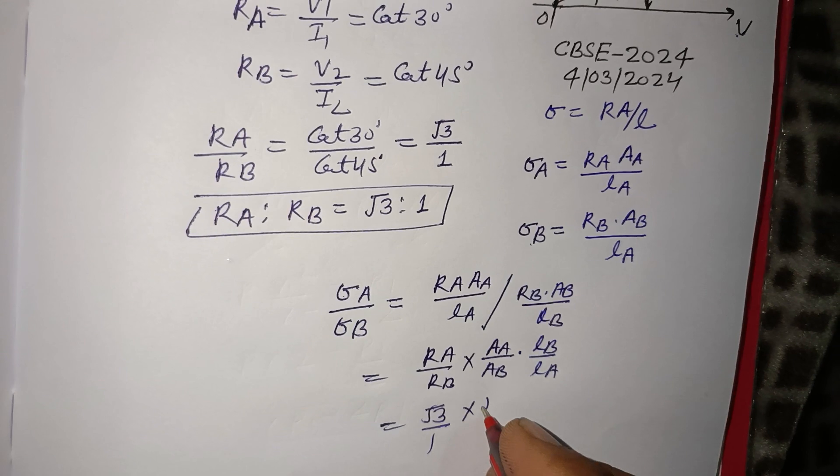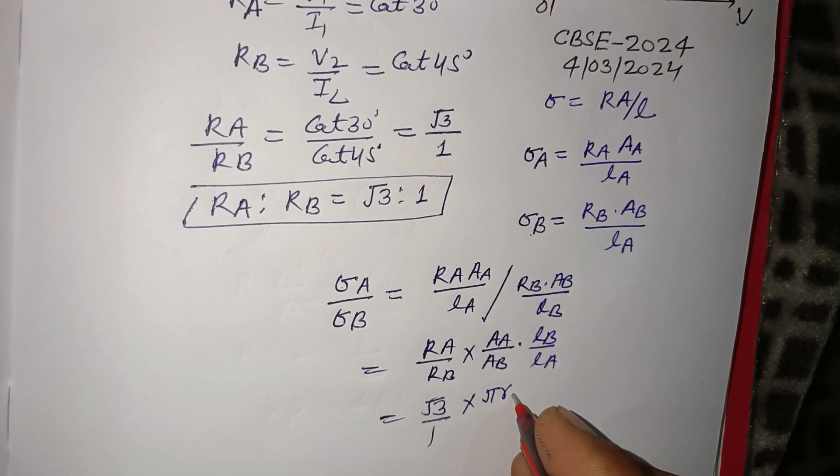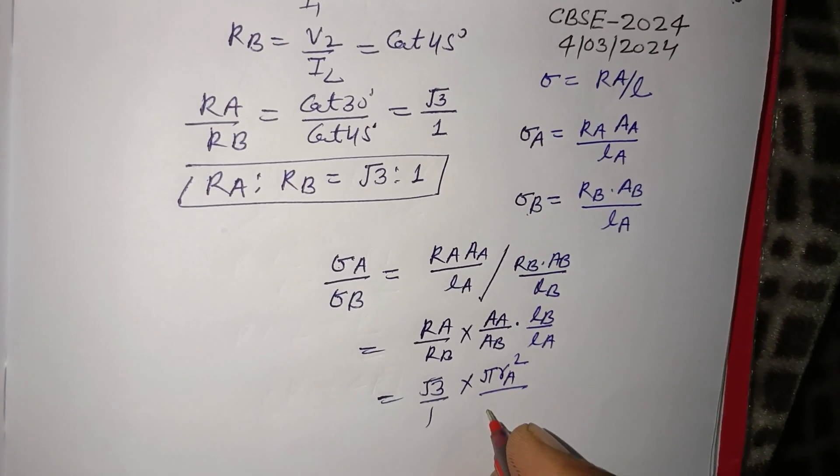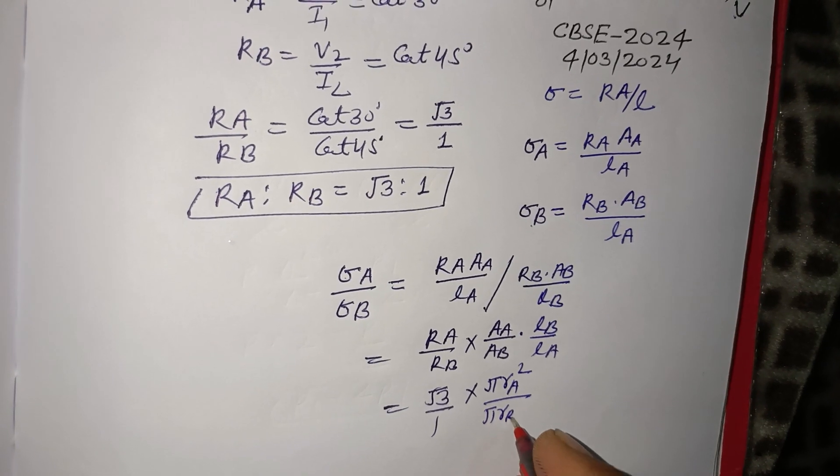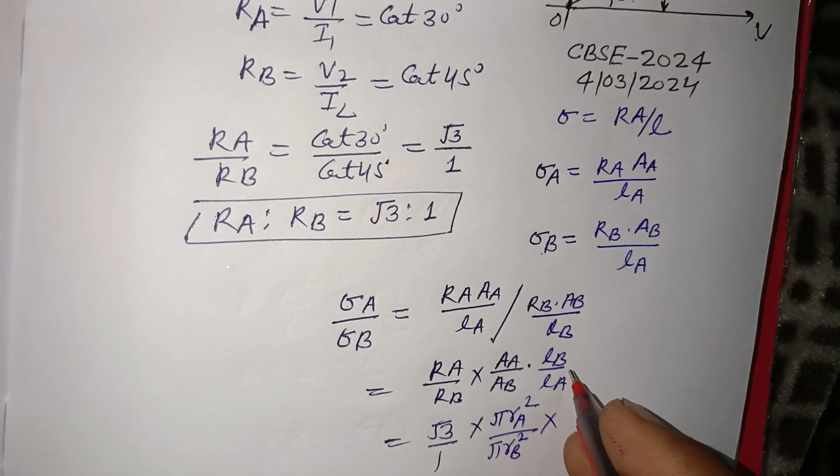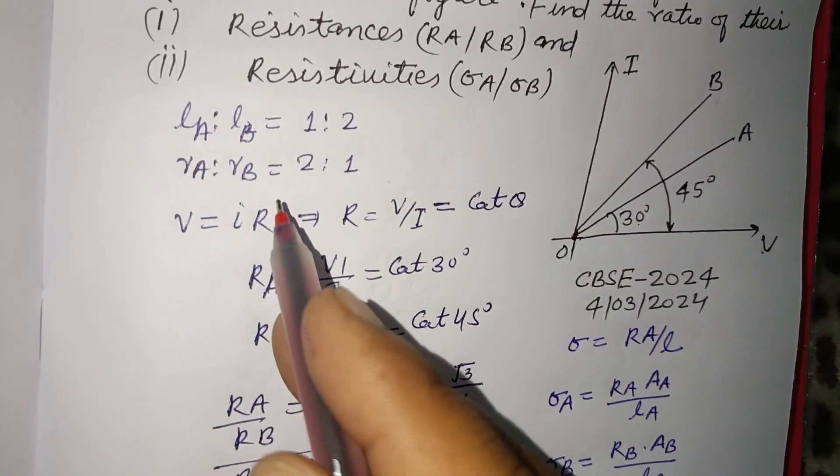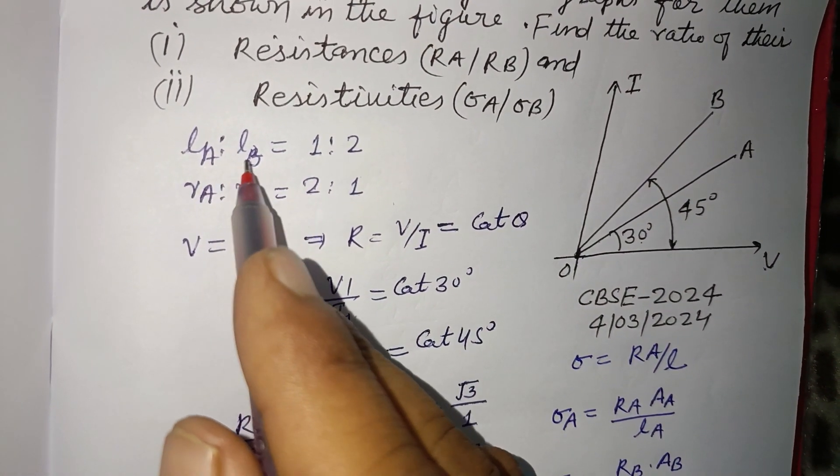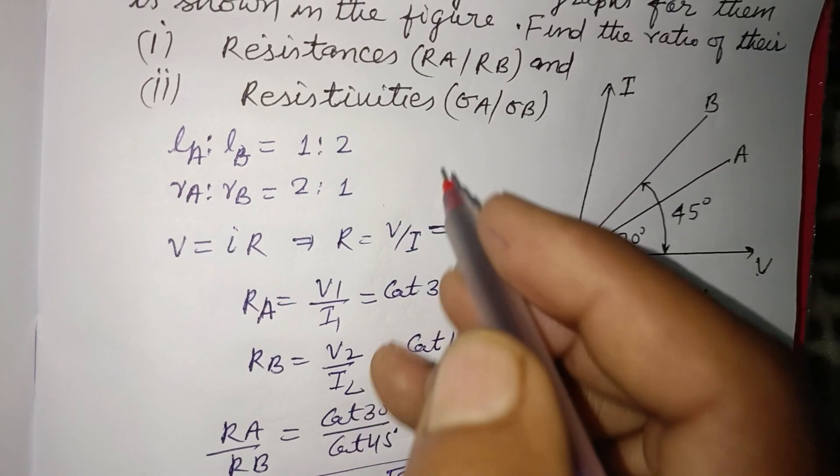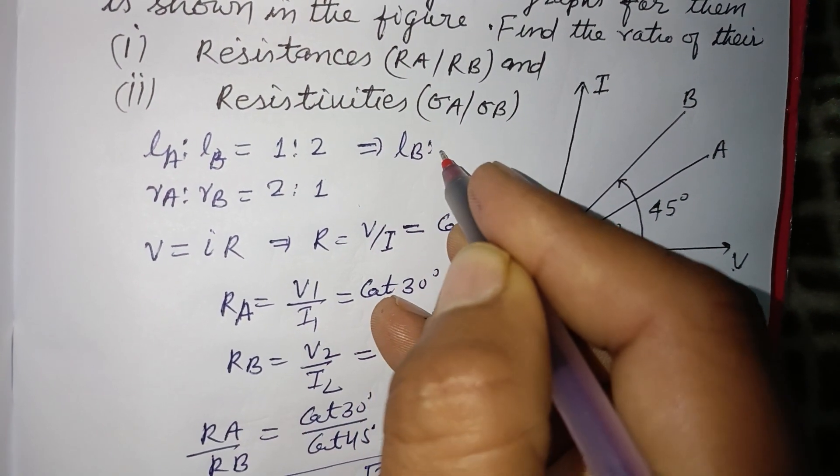And AA/AB is πRA²/πRB² times LB/LA. LB/LA is given to us here. Since LA/LB is 1:2, therefore LB/LA is 2:1.